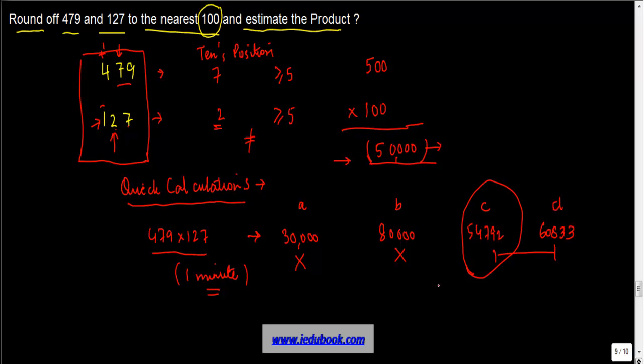While at first the answer might seem to be 54,792, actually if you see the product of these two numbers, it's 60,833.